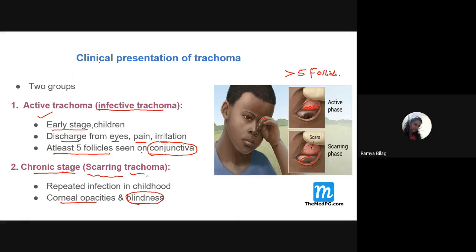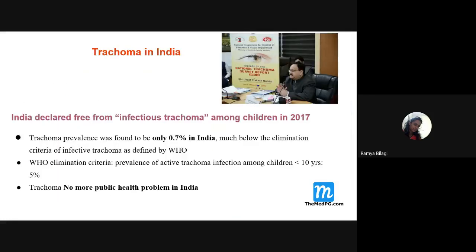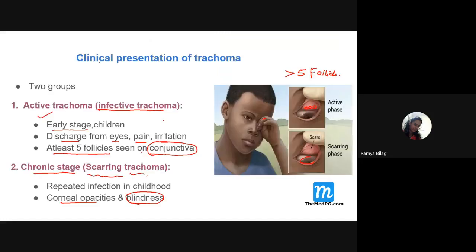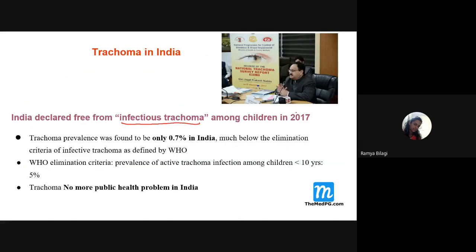From a public health perspective, India has declared freedom from infectious trachoma. The active or infectious trachoma has been eliminated, declared in the year 2017 by the then Health Minister Shri Jagat Prakash Nadda. India's trachoma prevalence was found to be only 0.7%, much less than the WHO threshold of less than 5% in children under 10 years. India has declared trachoma is no longer a public health problem.